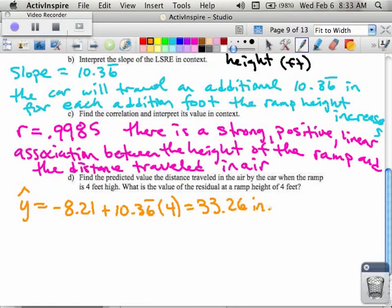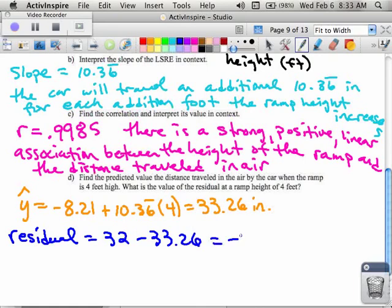To find your residual, the residual will be equal to the actual value at four feet which was thirty two minus this thirty three point twenty six, or in other words negative one point two six inches.